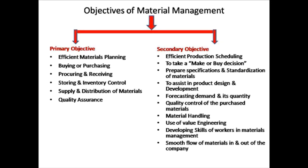What are the objectives of material management? There are two objectives: the primary objective and the secondary objective. In the primary objective: efficient materials planning, buying or purchasing, procuring and receiving, storing and inventory control, supply and distribution of materials, and quality assurance — all these are the primary objectives of material management.